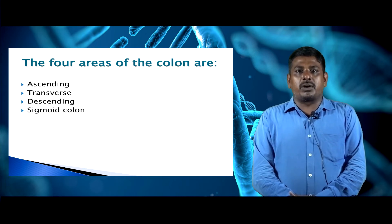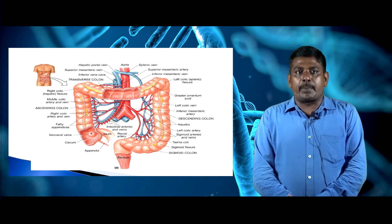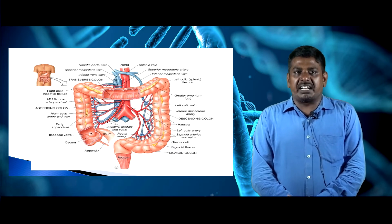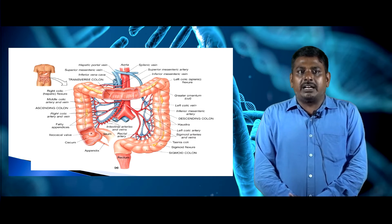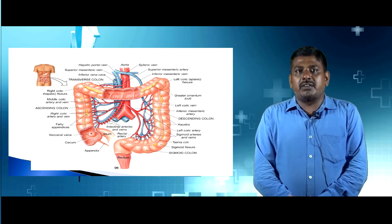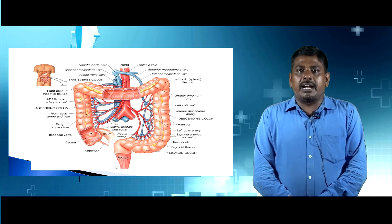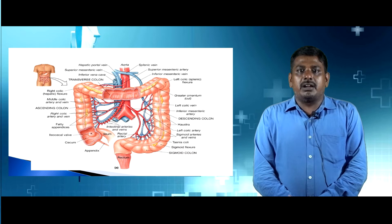The colon contains four main parts: the transverse colon, ascending colon, descending colon, and sigmoid colon. The right side of the colon contains the hepatic portal vein, superior mesenteric vein, inferior vena cava, right colic flexure, middle colic artery and vein, right colic artery and vein, fatty appendices, ileocecal valve, cecum, and appendix. The left side contains the superior mesenteric artery, inferior mesenteric vein, left colic flexure, greater omentum, left colic vein, inferior mesenteric artery, left colic artery, and sigmoid arteries and veins.